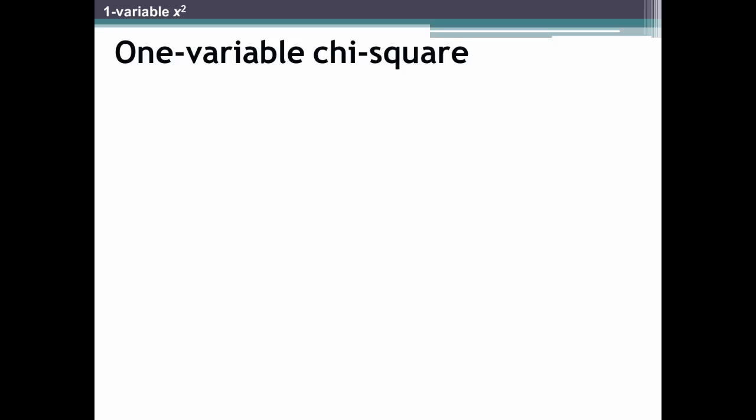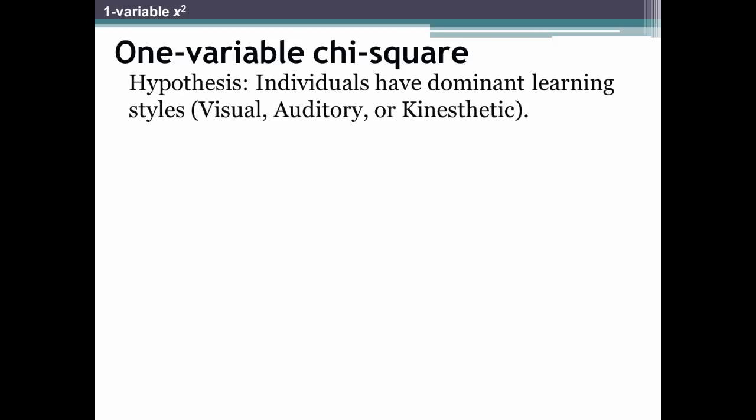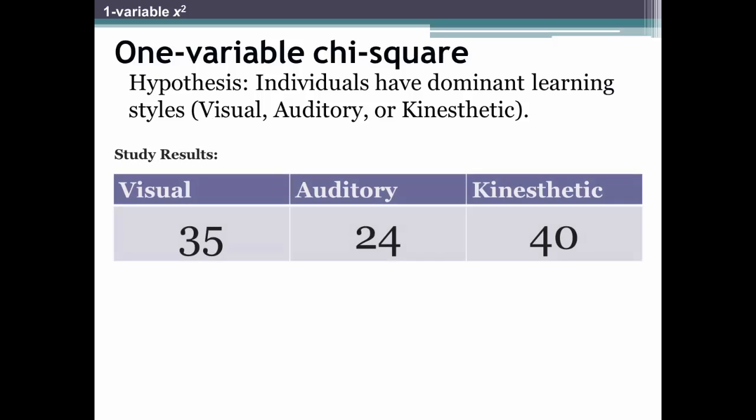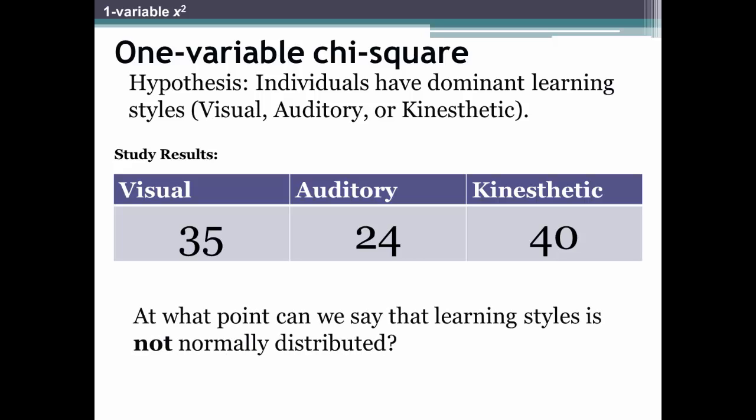It has been argued that individuals have dominant learning styles — visual, auditory, or kinesthetic. You do a survey of 99 people and get the following results: 35 were visual learners, 24 were auditory learners, and 40 were kinesthetic learners. These are your observed frequencies. And as a reminder, chi-square is used for categorical or nominal data, not continuous-level data. In other words, you don't calculate chi-square for data that you can summarize in means. The question is, at what point can we say that learning styles is not normally distributed?